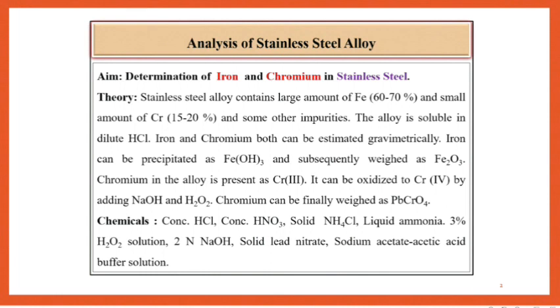Iron can be precipitated as Fe(OH)3 and subsequently weighed as Fe2O3. Chromium in the alloy is present as Cr3+, it can be oxidized to Cr6+ by adding NaOH and H2O2. Chromium can be precipitated as PbCrO4.